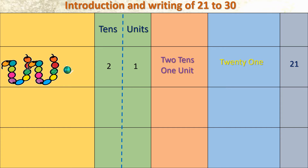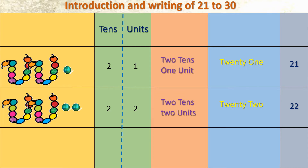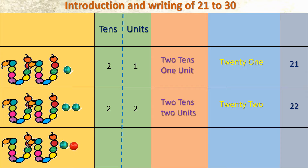Now we need the next number, so we will add one more bead. Two tens and two units — the number formed is 22, and in numerals 20 and 2. Next: two strings of beads and three units. Two tens, three units — the number formed is 23.